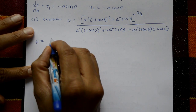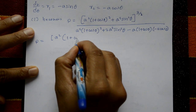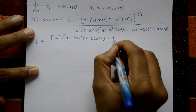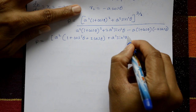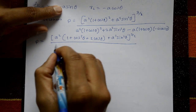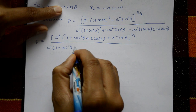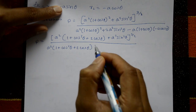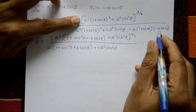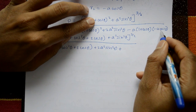With r2 = −a·cosθ, the numerator becomes: a²[(1 + cosθ)² + sin²θ]^(3/2). Expanding (a + b)² = a² + b² + 2ab gives a²[1 + cos²θ + 2cosθ + sin²θ]^(3/2). The denominator similarly expands using (a + b)² = a² + b² + 2ab, plus 2a²sin²θ, minus a²cosθ·(−cosθ) giving +a²cos²θ.